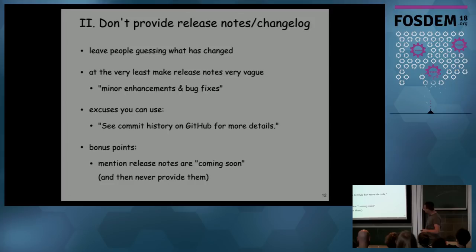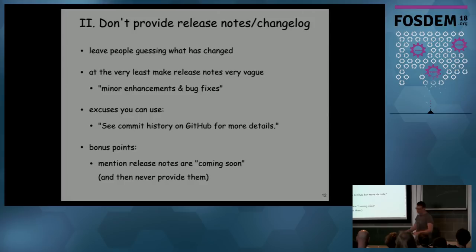Don't give people release notes or changelogs — just leave them guessing. If you do want to have release notes, or somebody's forcing you to, just say 'minor enhancements and bug fixes.' As an excuse, tell people: 'Just use the commit history — it has all the changes.' You'll have clear commit messages like 'fixed typo' and all that stuff, they can look there. Bonus points: mention on the website that release notes are 'coming soon,' and then never put them there.